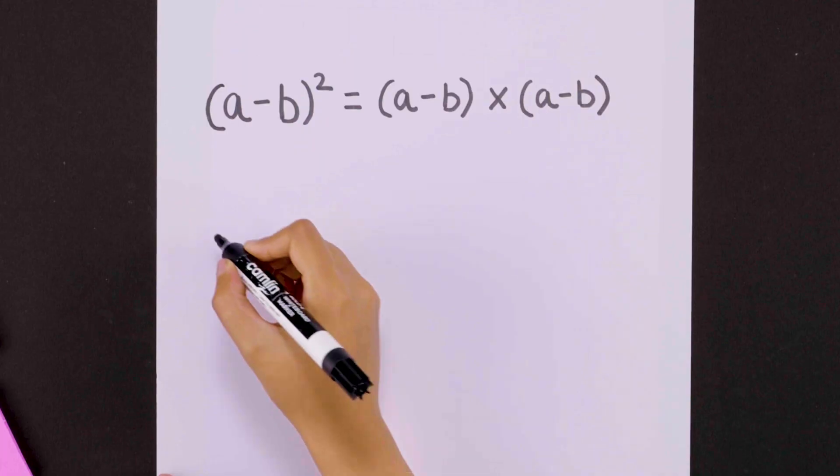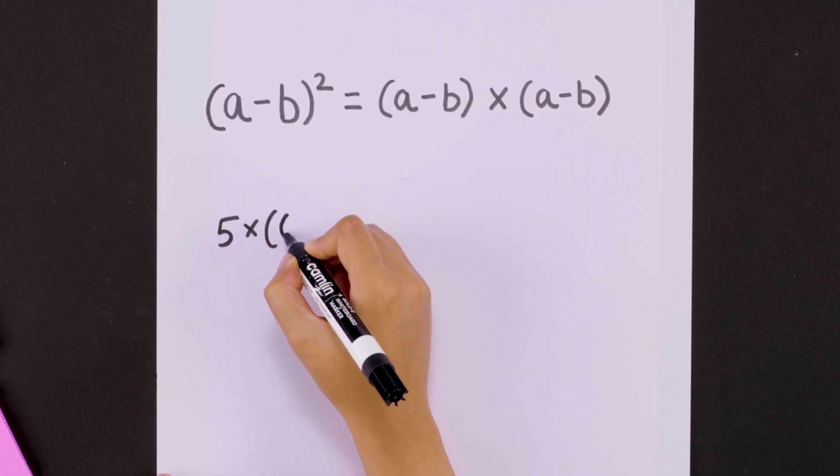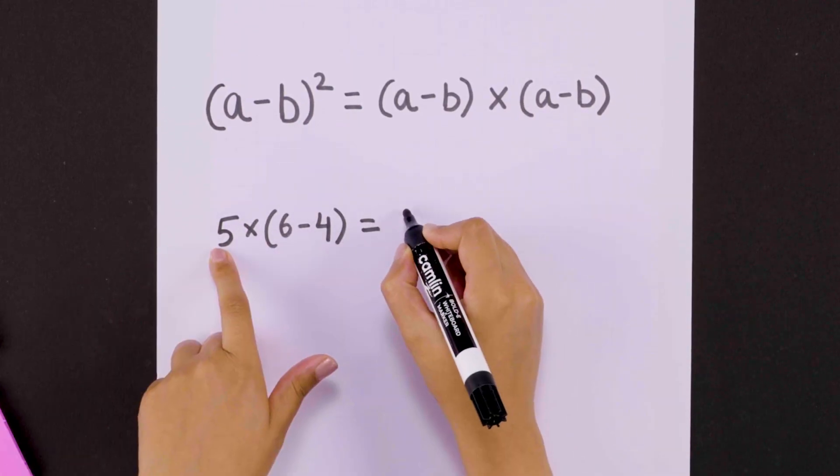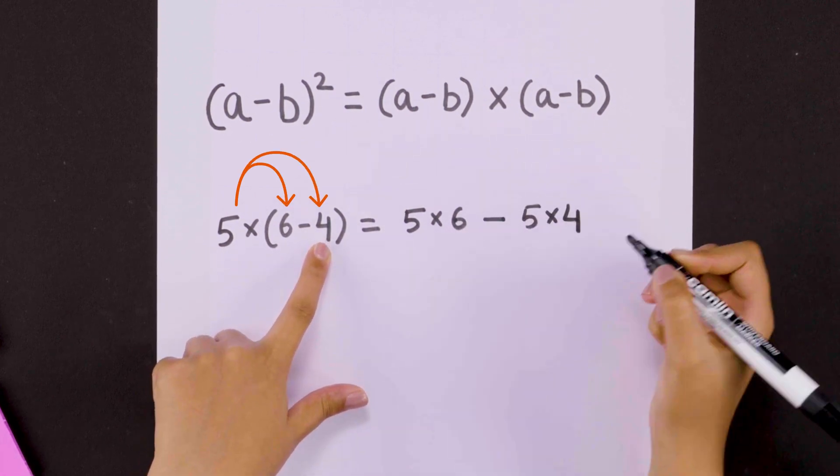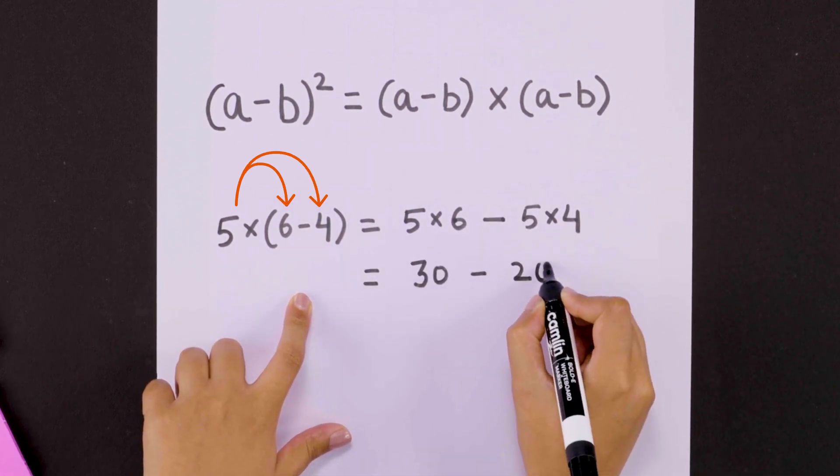For example, to find 5 times 6 minus 4, we'll first distribute 5 to 6 and then to 4. That's 30 minus 20 or 10.